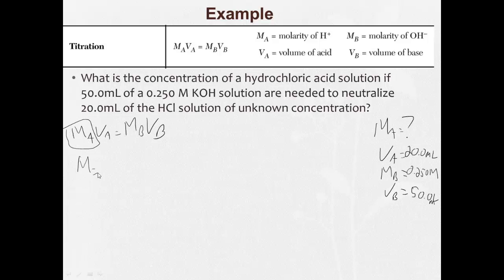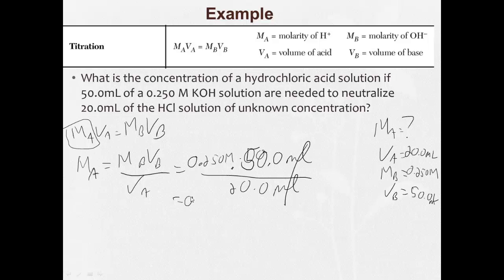So MA equals MBVB over VA. MB, 0.250 molar. VB, 50, 50.0 ml. Divided by VA, 20.0 ml. Mls cancel. I'm left with molar, which is what I'm looking for. I plug into my handy-dandy calculator, 0.250 times 50.0 divided by 20.0. And I get 0.625 molar.